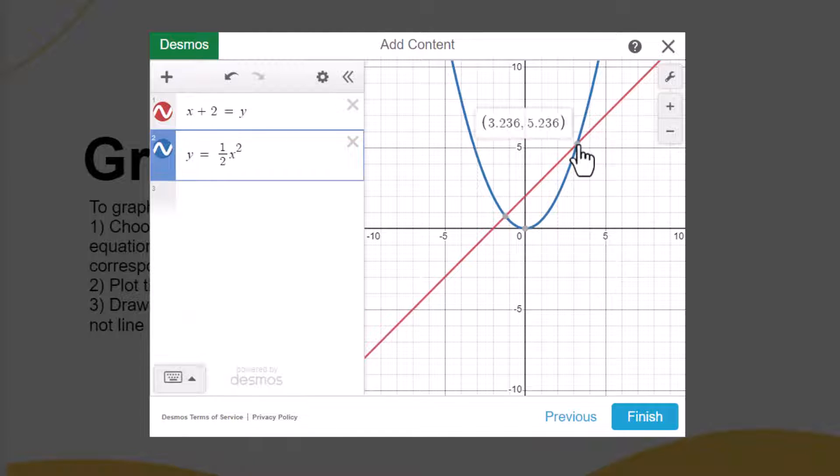To reveal coordinates on the graph, simply click or tap on any point of interest and Desmos will show the coordinates.